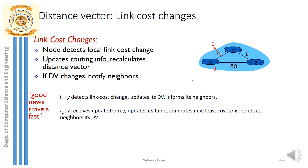Node z updates its table with: distance vector of y equals 1. Then z computes its new least cost to reach x. The new least cost is cost from z to y (which is 1) plus the distance vector of y (which is 1), giving 1 plus 1 equal to 2. So distance from z to x equals 2 is updated in node z's table at t=1.